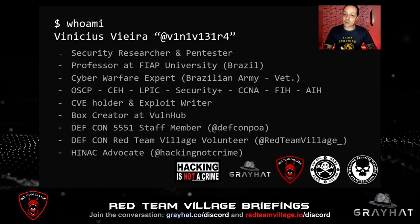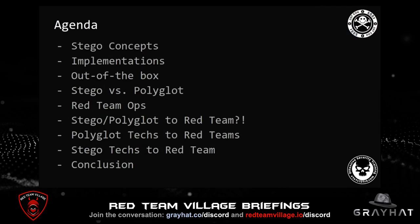But let's stop talking about me and move on. Today we are going to talk about what steganography is, remember some important concepts, and see some ways of implementing this technique in InfoSec — including some very cool out-of-the-box ideas. We'll cover the difference between stego and polymorphic files — polyglots — what a Red Team operation is, and how to use steganography for bypassing antivirus, AMSI, EDR, and so on.